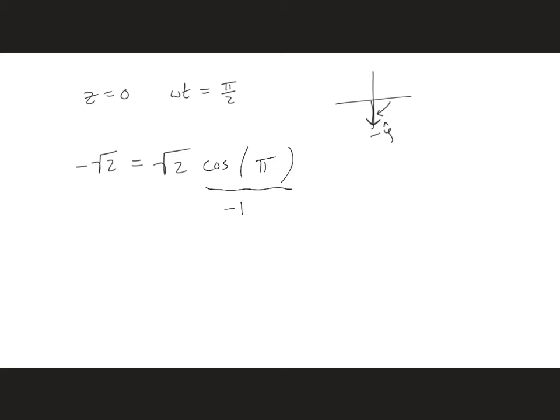So this we would want to have equal to pi, the argument. So the argument for the y-component we had on the previous slide was omega t plus kz plus or minus pi over 2, since phi naught we found is 0. And so omega t is equal to pi over 2, kz is equal to 0, and then we have plus or minus pi over 2, and we want this to equal pi, so that means we need to use here plus pi over 2.